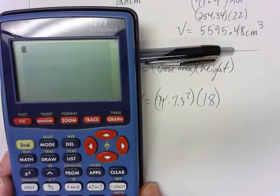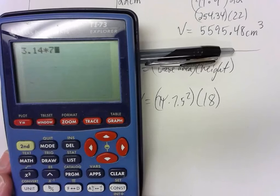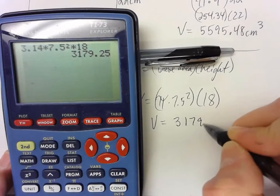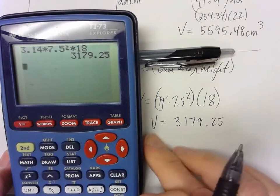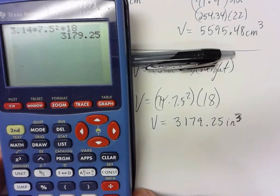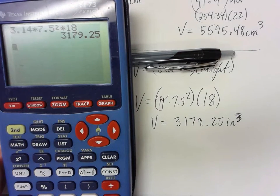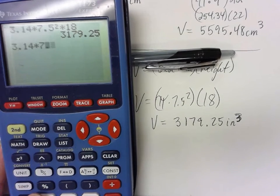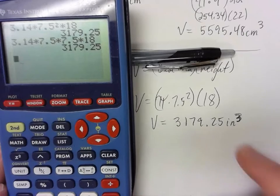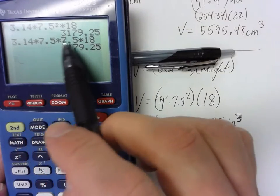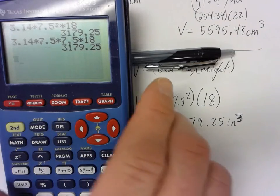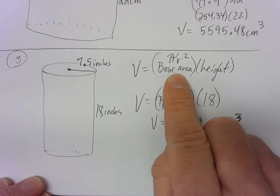Pi times 7.5 squared times 18 gives a volume of 3,179.25 — that would be inches cubed. If you don't have the squared button, do 3.14 times 7.5 times 7.5 times 18, which still gives you 3,179.25 inches cubed. We multiply two radiuses and the height, so three items multiplied together — that's why volume is cubed.